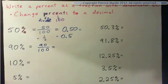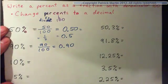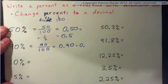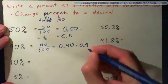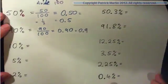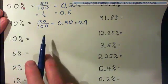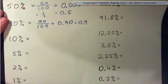And as a decimal, that's 90 hundredths. So how would you write that as a decimal? As a decimal, 0.90, 90 hundredths. Or of course, simply 0.9. So please go ahead and do 10%. What is 10% as a fraction with denominator 100 and as a decimal?